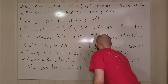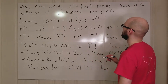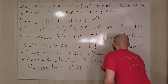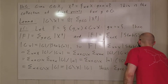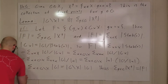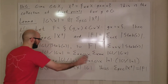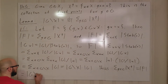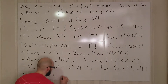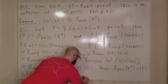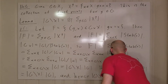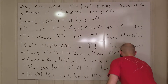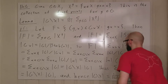How many α's are we summing over? Just the number of orbits. So the whole expression equals the number of orbits times |G|. Going back, the sum over all g in G of |X^g| equals |F|, which equals the number of orbits times |G|. Dividing both sides by |G|, we conclude that the number of orbits equals one over |G| times the sum over all g in G of the size of the fixed points of g.